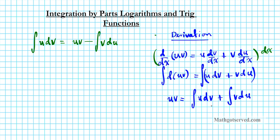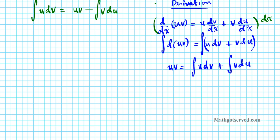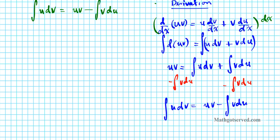If we subtract the indefinite integral of v du from both sides, we end up with the integral of u dv equals uv minus the integral of v du. So this is the integration by parts formula — it's just another variation of the product rule, and that's where it comes from.